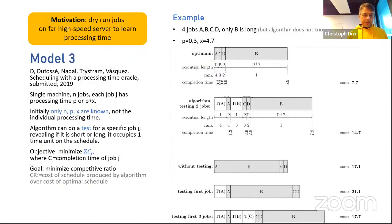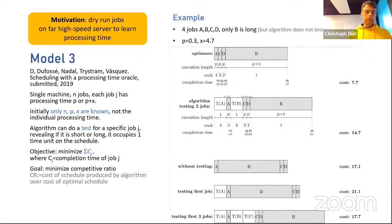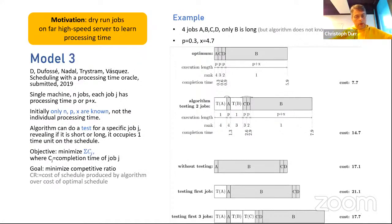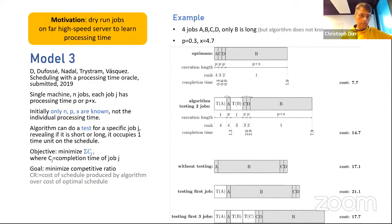Each job has a processing time that is either short (length p) or long (p + x). The parameters p, x, and n are known to the algorithm at the start — these are the only parameters known initially. The algorithm doesn't know which job is short and which is long, but can do a test for a specific job that reveals whether it's long or short, occupying time 1 on the schedule. In practice, you might have a high-speed remote server: run the job there (takes almost no time), learn whether it's quick or long, but still need to schedule it locally because it needs local resources.